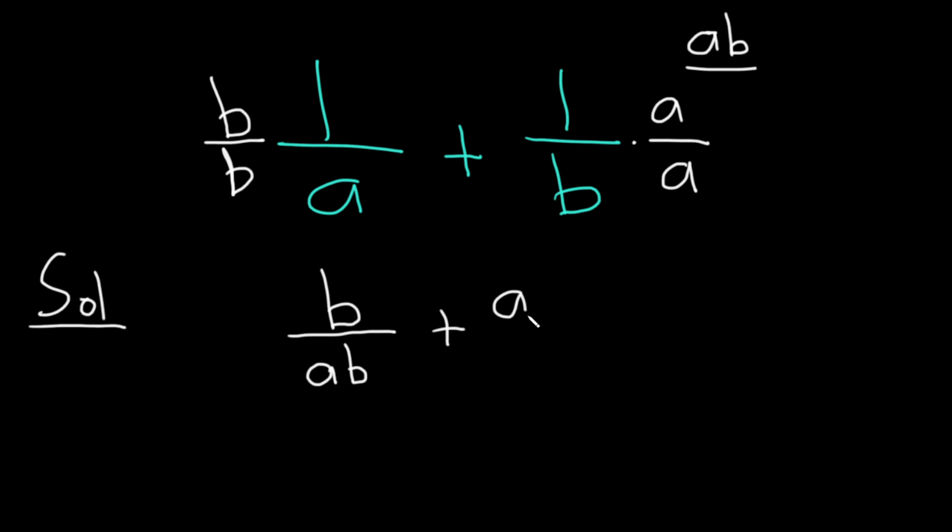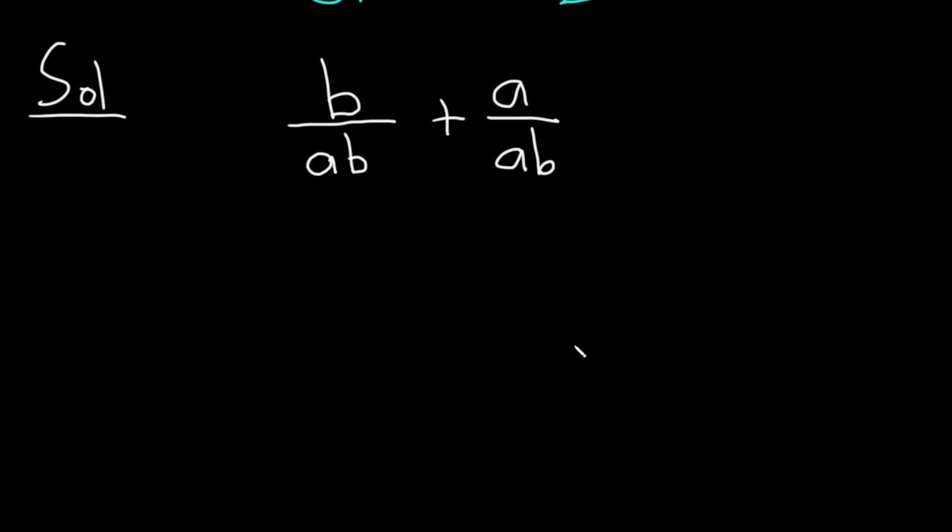a times 1 is a. And then a times b is ab. And now we have the same denominator. So we can just add straight across b plus a over ab. Which you can write as a plus b over ab, if you like.